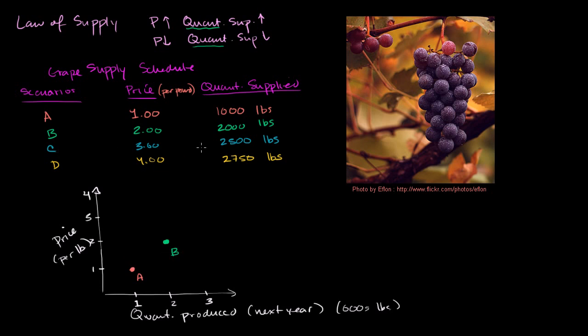At $3, we'd supply 2,500 pounds. Oh sorry, I want to make, see, notice, I get my axes confused, this is price, this is what we're kind of, when we talk about it this way, that we're kind of viewing the thing that's changing, although we don't always have to view it that way. So at $1, 1,000 pounds, at $2, 2,000 pounds, at $3, this isn't $3, this is $3, 2,500 pounds, so right about there, that's about 2,500. So $3, 2,500 pounds, and that's about right, so this is scenario C.